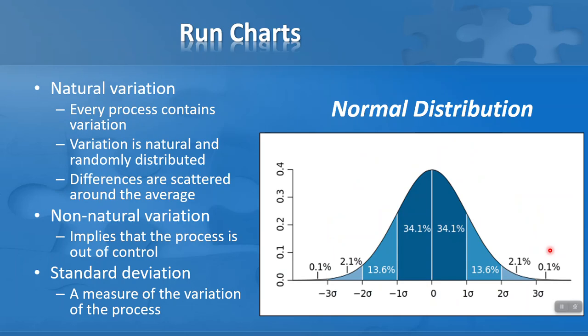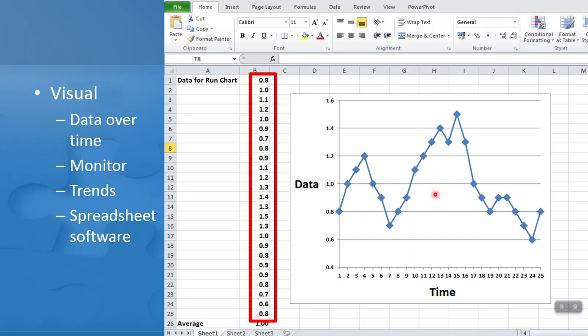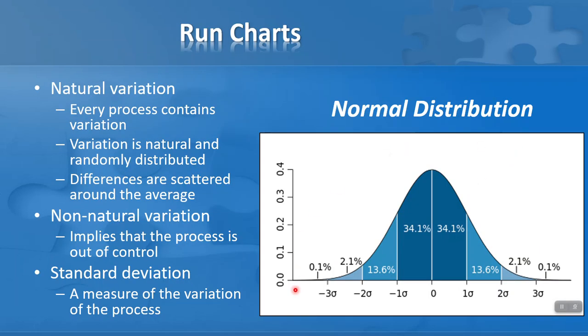Now I'm going to take a step back and look at a statistical concept known as the normal distribution. Every process contains variation. There's natural variation happening all the time, and it's usually randomly distributed. Differences are scattered around the average. This gives us the concept of the normal distribution - many of you will know this as the bell-shaped curve. If our data follows this pattern, it's considered to be a normal distribution. We can see in the center that half the values are above the center and half are below.